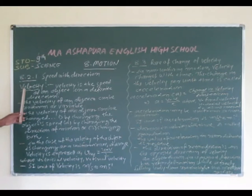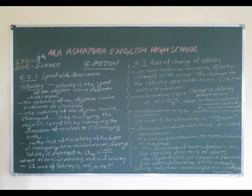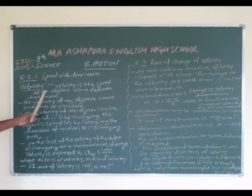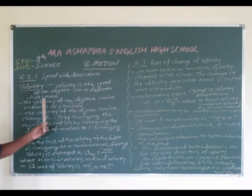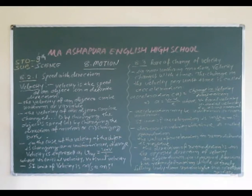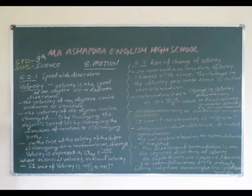Now, speed with the direction — when we describe the speed with the direction, it is called the velocity. So, velocity is the speed of an object in a definite direction. Velocity kya hai? Velocity hai speed of an object, jise definite direction ke saath describe kiya jata hai.